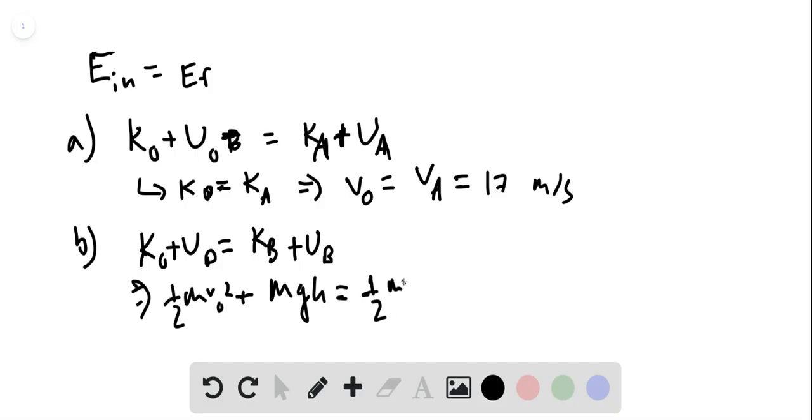And K-b is 1-half Mv-b squared, that's what we have to find, plus U-b, that's Mg times H over two, that's how much the height has changed. So the M's cancel in every term, we get rid of the M's, we multiply everything, both sides by two,